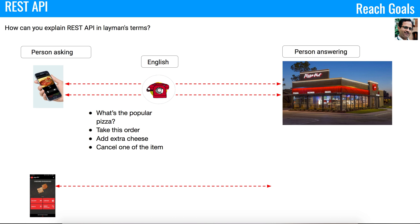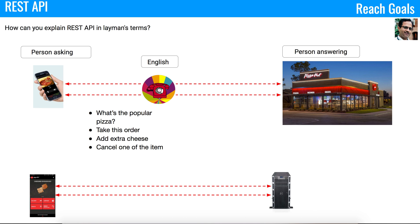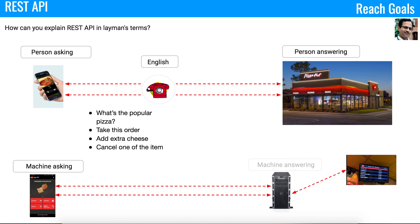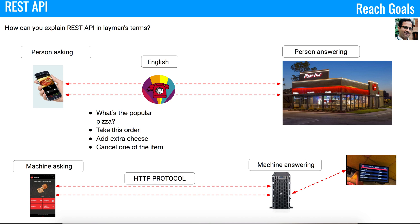Now let's take another case where you have an app installed in your smartphone and the app has to establish communication with a server. The server has to handle different requests like: what is a popular pizza, take this order, add extra cheese, or cancel an item. You need a common language to communicate between the app and the server — machine A talking to machine B. This is where the REST API concept is applied and the HTTP protocol comes into the picture.